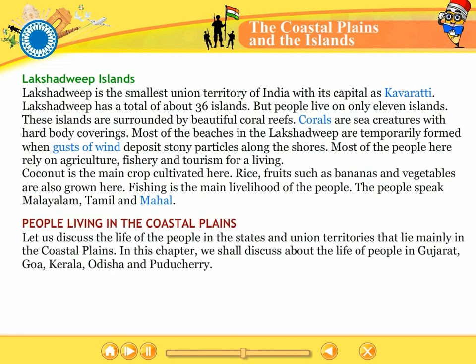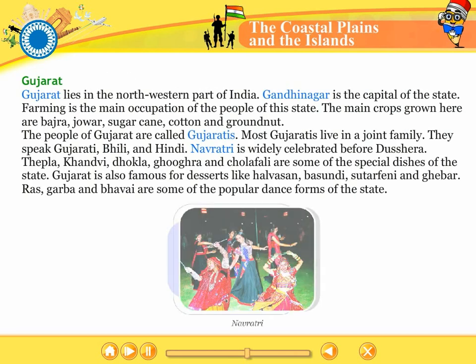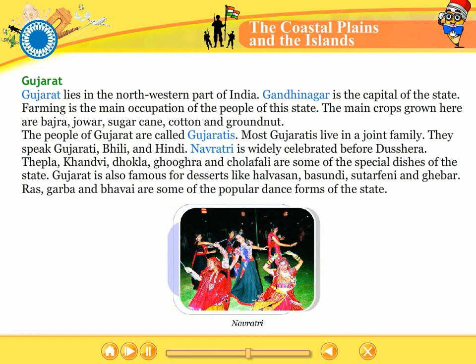Let us discuss the life of the people in the states and union territories that lie mainly in the coastal plains. In this chapter we shall discuss about the life of the people in Gujarat, Goa, Kerala, Odisha and Puducherry. Gujarat lies in the north-western part of India. Gandhinagar is the capital of the state. Farming is the main occupation of the people of this state. The main crops grown here are bajra, jowar, sugarcane, cotton and groundnut. The people of Gujarat are called Gujaratis. Most Gujaratis live in a joint family. They speak Gujarati, Bili and Hindi.